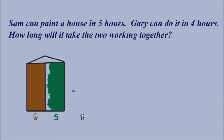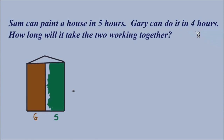Just after two hours Gary's half is done, Sam's half is almost done — there's really just a little bit left over. So we can see the answer will be just a little bit more than two hours. Gary is the faster worker, but with two people working at the same time it should take a lot less time than either one working alone. Sam in five, Gary in four, but those numbers are each working alone. Once they team up it will definitely take less time than either could alone.